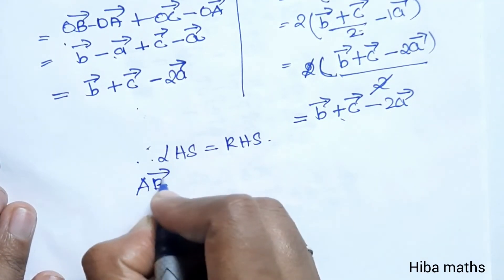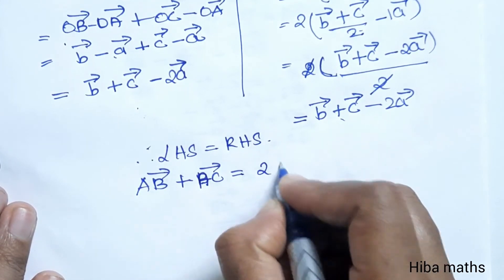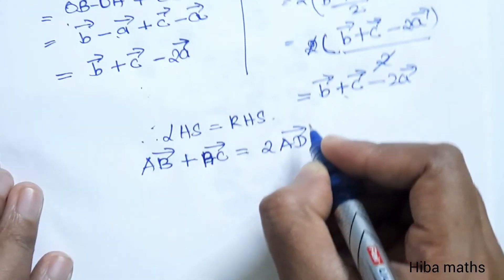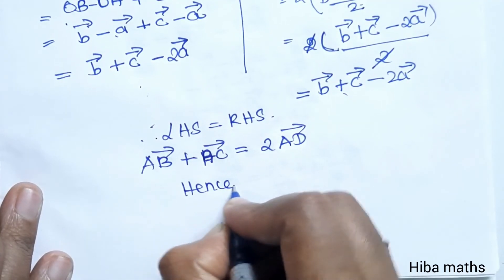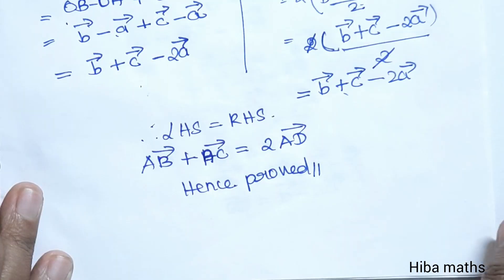AB vector plus AC vector is equal to 2 times AD vector. Hence proved. This is a very easy sum. You can try to solve it. Thank you so much for watching.